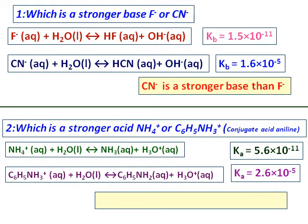The Ka's are also given. So comparing the Ka, we realize that the aniline reaction, C₆H₅NH₃⁺ reaction, is more favored. And therefore, the conjugate acid of aniline, the C₆H₅NH₃⁺, is the stronger acid than ammonium⁺.